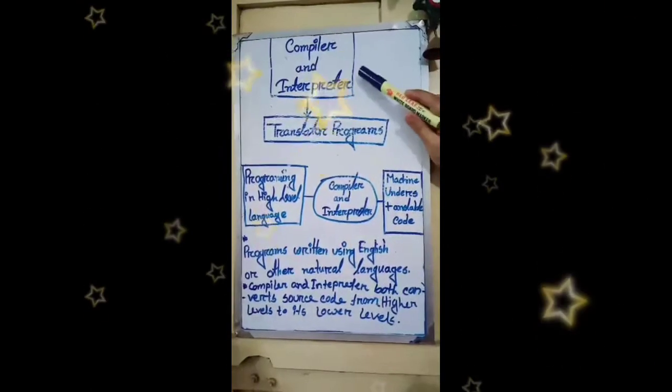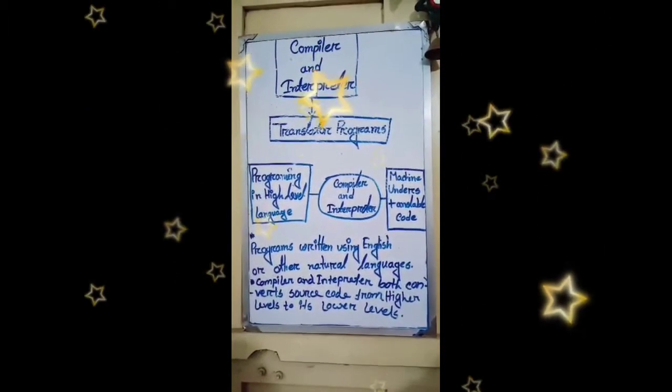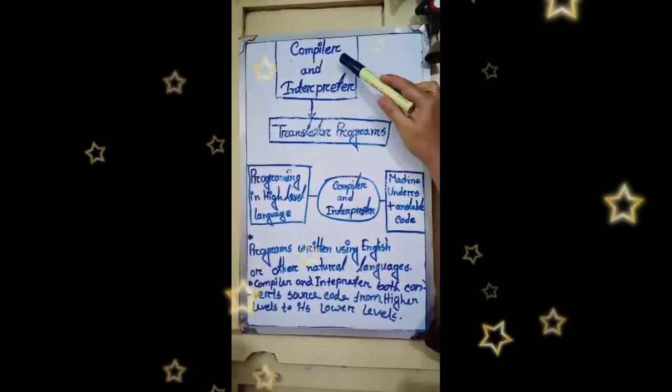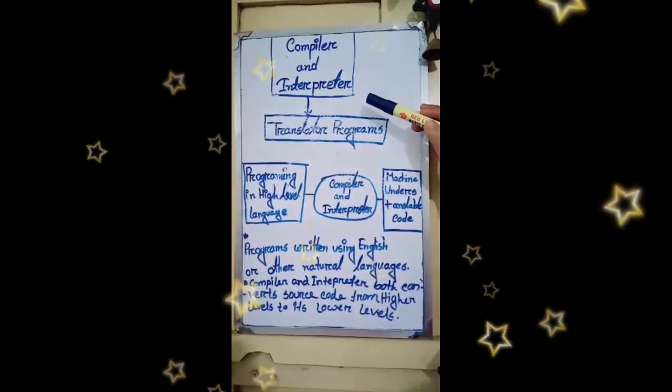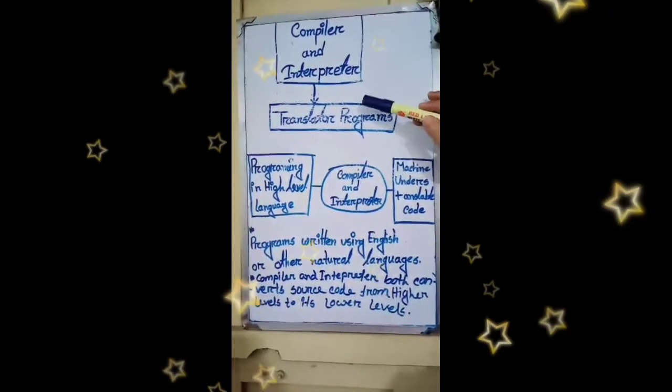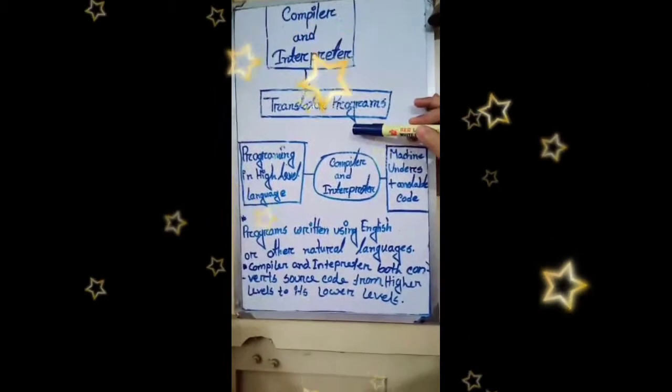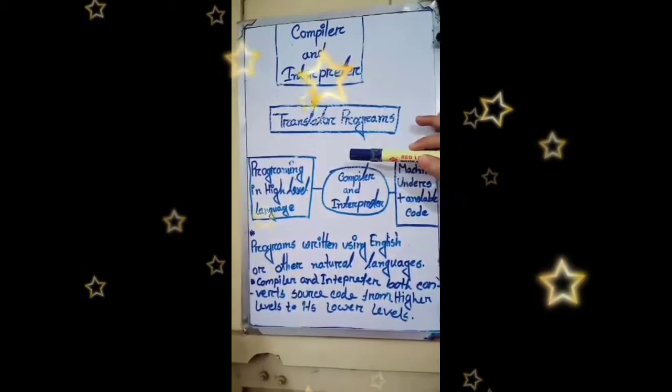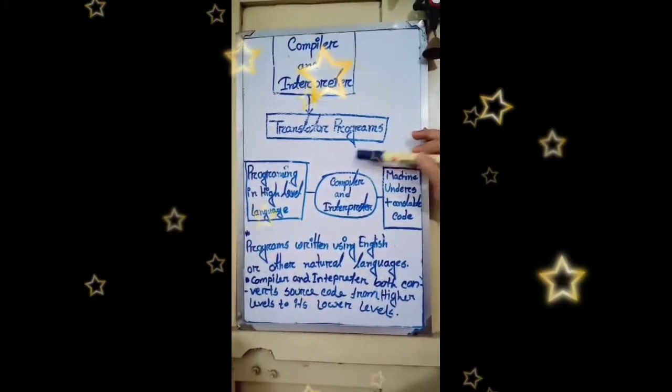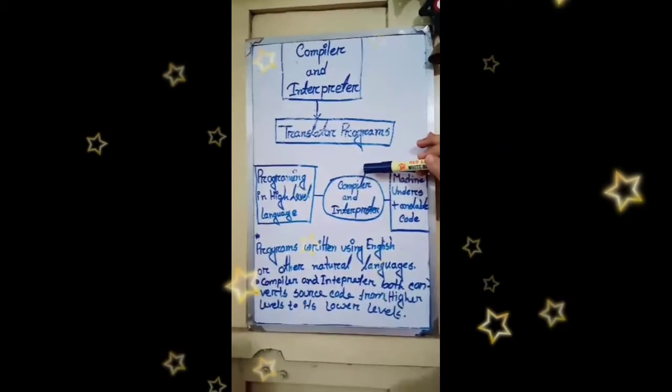First question that can arise: what are compiler and interpreter? In general, these are translator programs that translate computer source code written in one programming language to another programming language. Compiler and interpreter are primarily used to convert source code written in high-level language to its corresponding machine-understandable code.